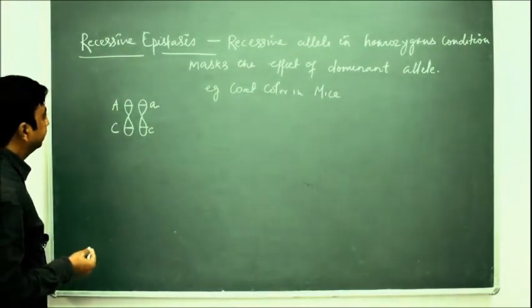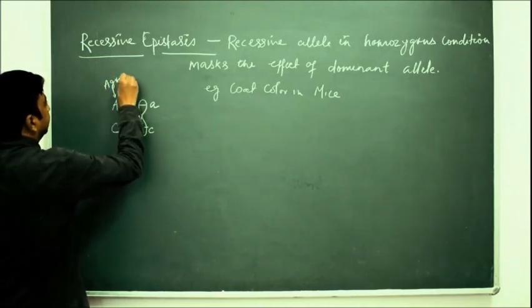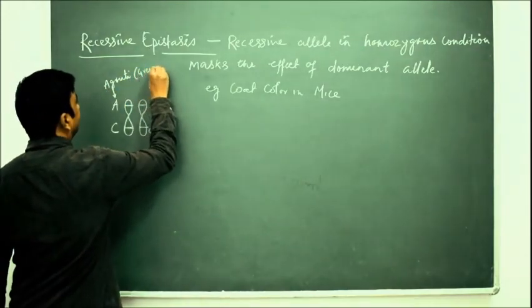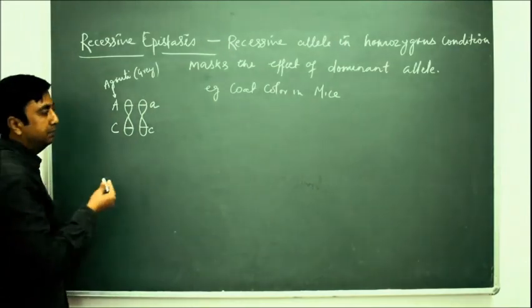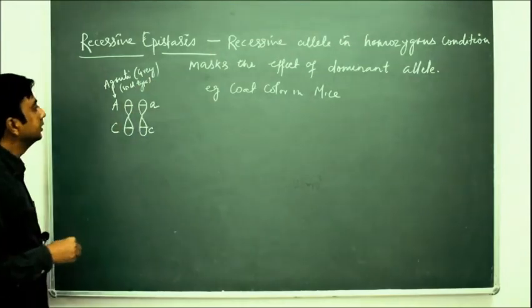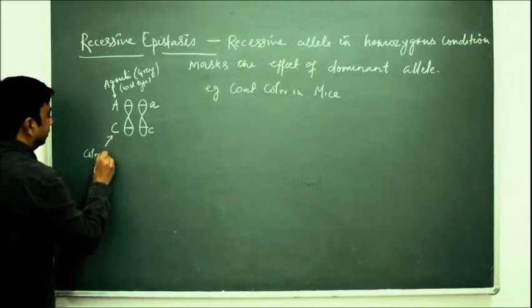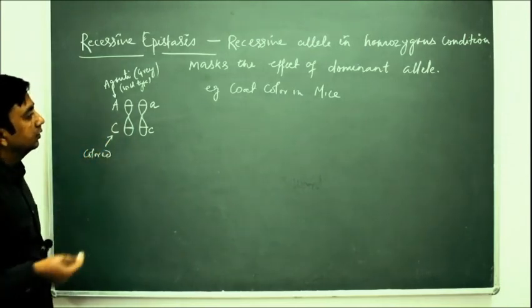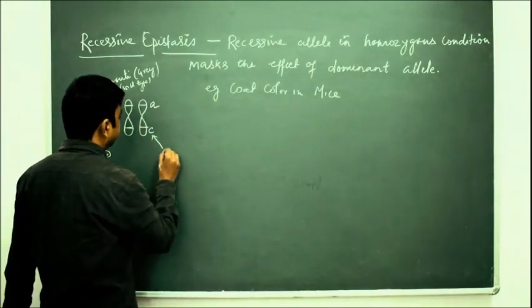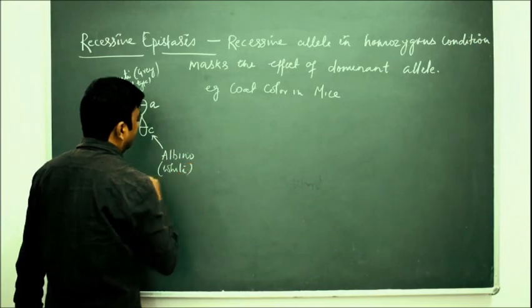Capital A codes for coat color agouti. Agouti is actually gray in color and it is the wild type. Capital C codes for colored coat color, and small c codes for black.